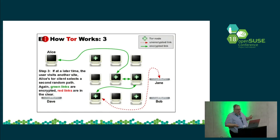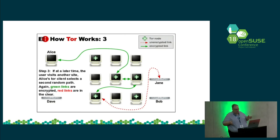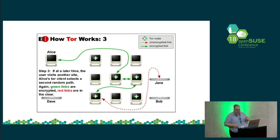If at any time the user visits another site, Alice's Tor client selects a secondary random path. Again, the green links are encrypted, the red links are not.